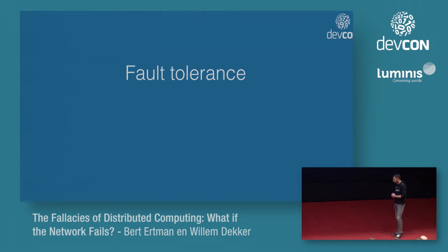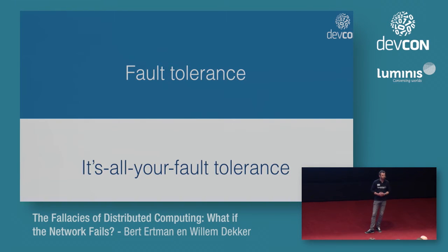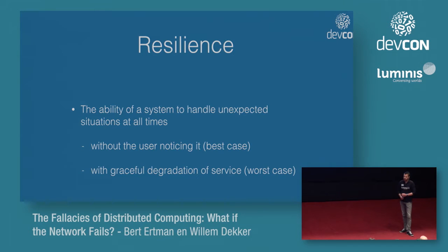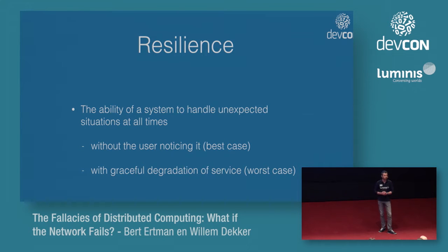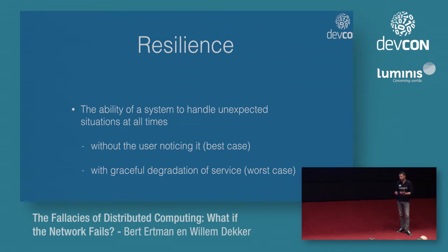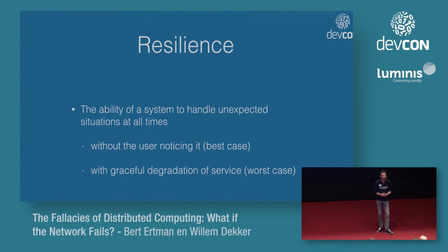This is a story about fault tolerance — getting ready for the new world order of distributed systems — versus it being all your fault when something goes wrong. What we're after is resilience. If you saw the keynote earlier today, you already heard stories about resilience. We're trying to handle the unexpected in a graceful way. Best case: the user won't even notice. Worst case: we have a mechanism for graceful degradation — some parts may not function, but we can still serve something useful to most users.